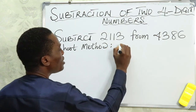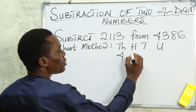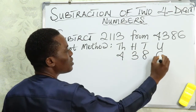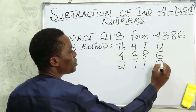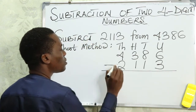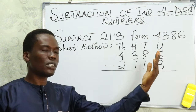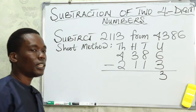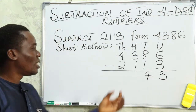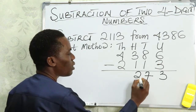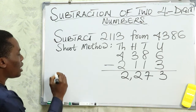With the short form method, we arrange the numbers in columns: thousands, hundreds, tens, and units. So 4386 has: 4 in thousands, 3 in hundreds, 8 in tens, 6 in units. And 2113 has: 2 in thousands, 1 in hundreds, 1 in tens, 3 in units. Now we subtract: 6 minus 3 gives 3; 8 minus 1 gives 7; 3 minus 1 gives 2; 4 minus 2 gives 2.